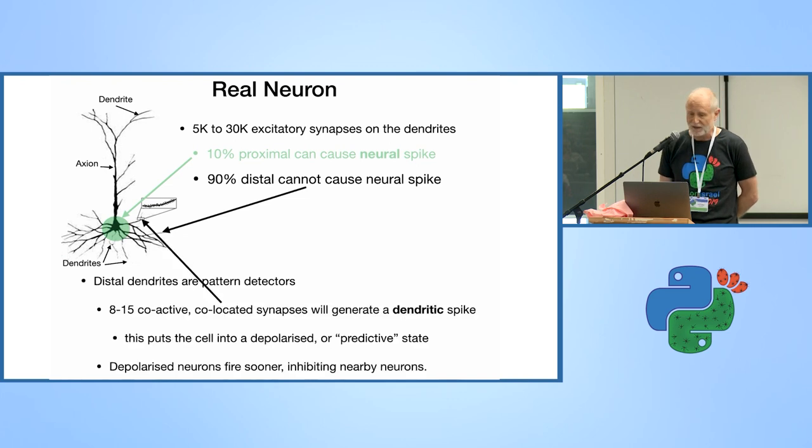It turns out that they're pattern detectors, very good ones. If between 8 or 15 synapses that are reasonably close together are fired together, this will cause what's called a dendritic spike which travels to the cell body. It's not strong enough to actually fire the neuron, but it puts it into what's called a predictive state. A neuron that's in a predictive state will fire faster if a feedforward signal comes up through the proximal dendrites than a neuron that's not in a predictive state. Remember this, because we're going to talk a lot about that.